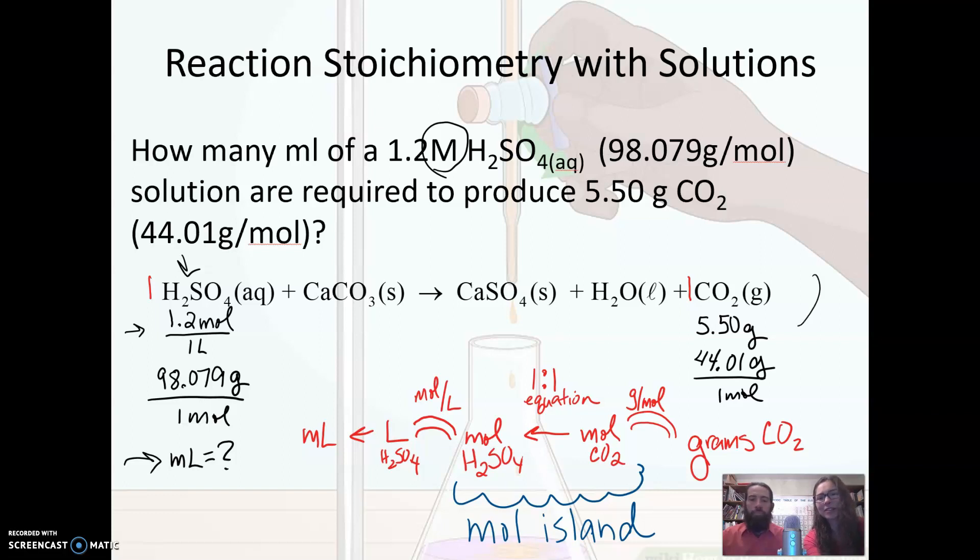I want milliliters of H2SO4 when I'm all done, and I also have some provided information about carbon dioxide. So I have information about carbon dioxide and I need to get to a volume of H2SO4. When you have information about one thing and you need information about something else that's in that balanced equation, you have to go to mole island.